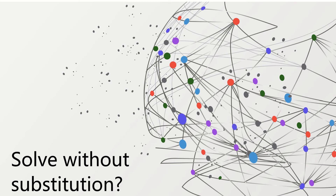The two things we've explored so far are the equal values method — where, if we have two equations written in slope-intercept form, we can take the expressions that y equals and set those equal to each other — and more recently, substitution: taking a valid substitution from one equation and plugging it into the other. Today we're going to explore solving things without substitution, but first let's look at a problem solved with substitution.